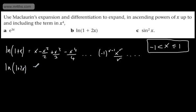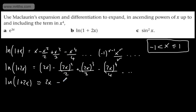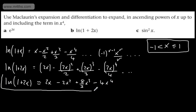That gives us 2x − (2x)²/2 + (2x)³/3 − (2x)⁴/4, and so on. Expanding this out: ln(1+2x) ≈ 2x − 4x²/2 + 8x³/3 − 16x⁴/4, which simplifies to 2x − 2x² + 8/3·x³ − 4x⁴.